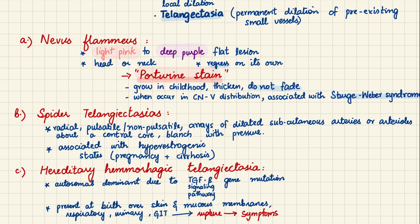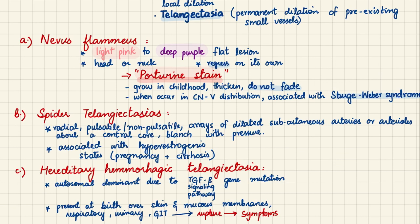Hereditary hemorrhagic telangiectasia is an autosomal dominant condition involving a gene mutation in the TGF-beta signaling pathway. TGF-beta is a peptide that controls cellular proliferation and differentiation, so when there is a problem with it, there is uncontrolled endothelial cell proliferation and telangiectasias form.